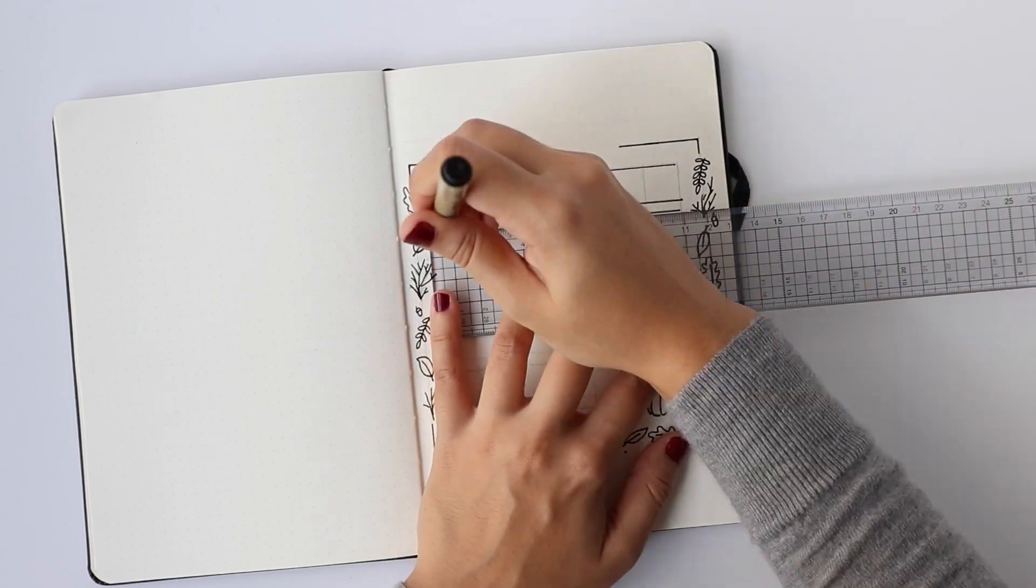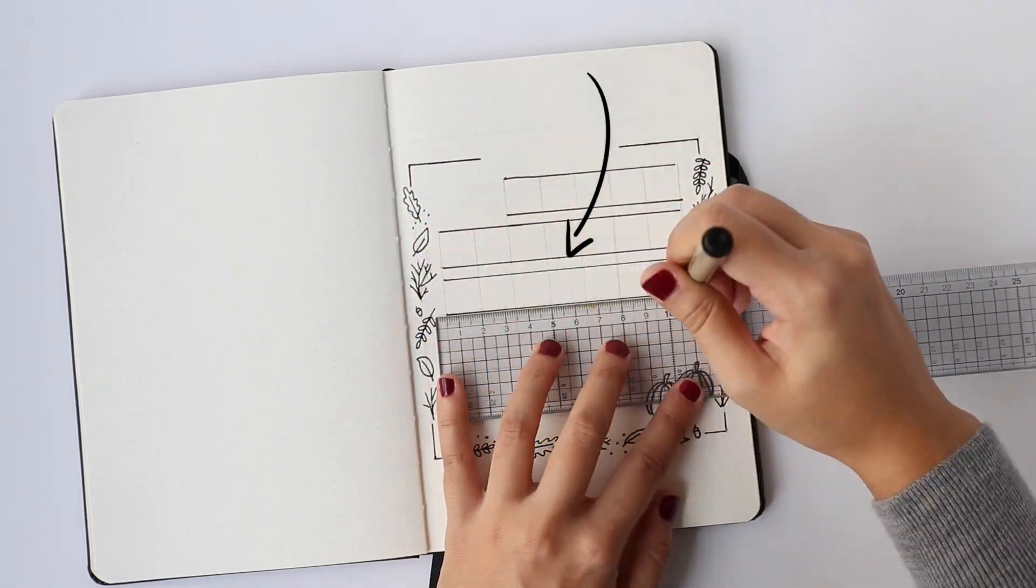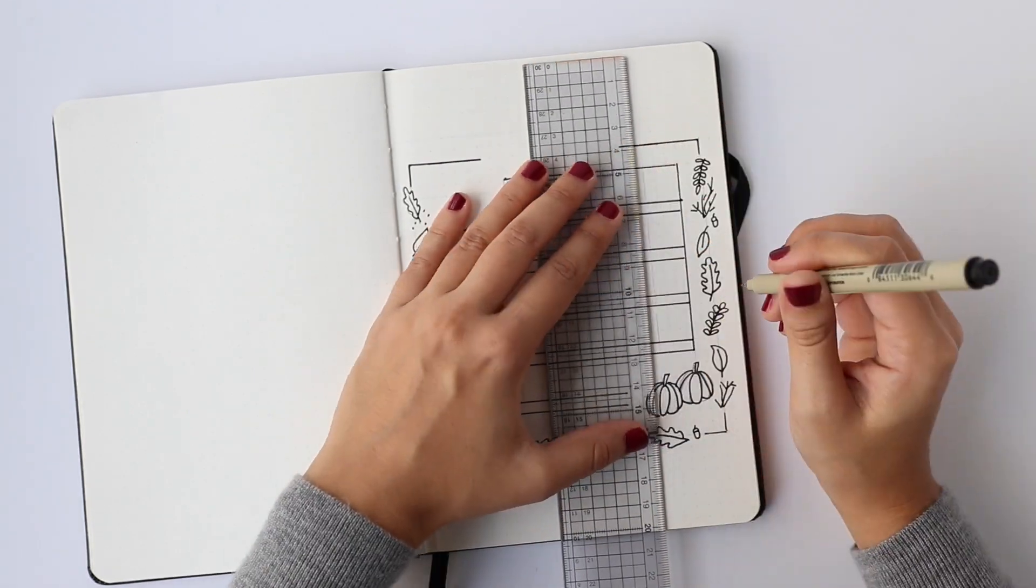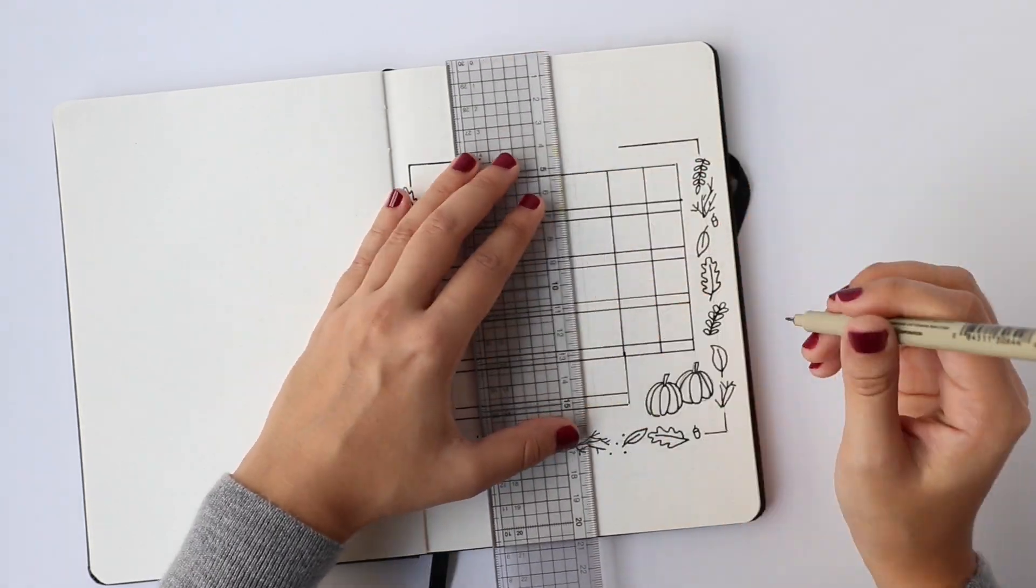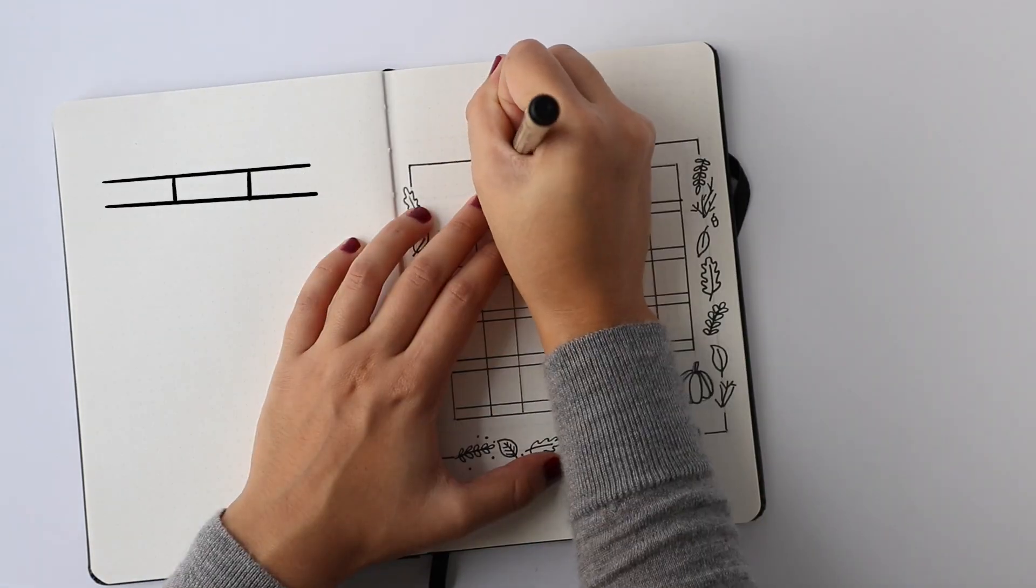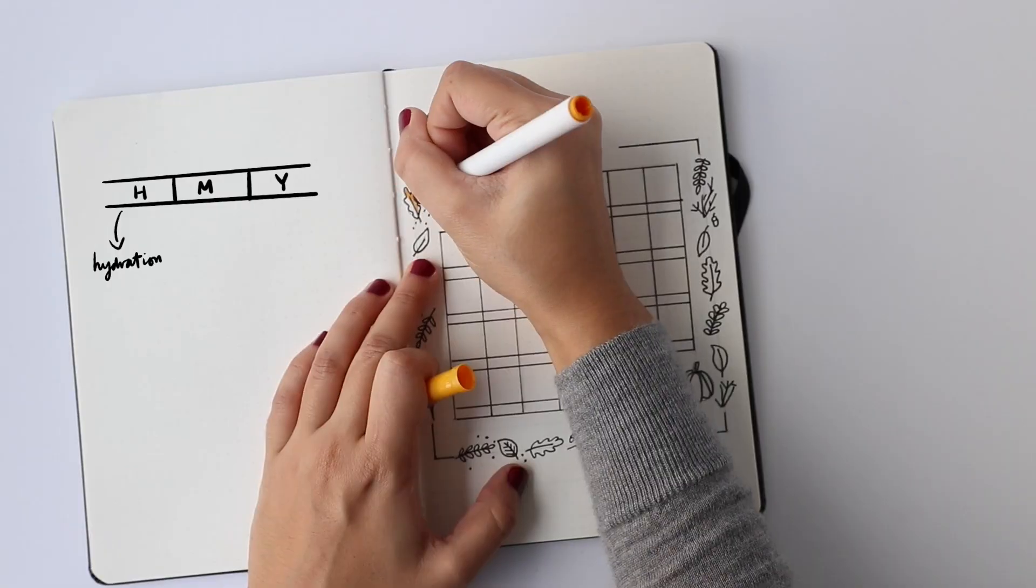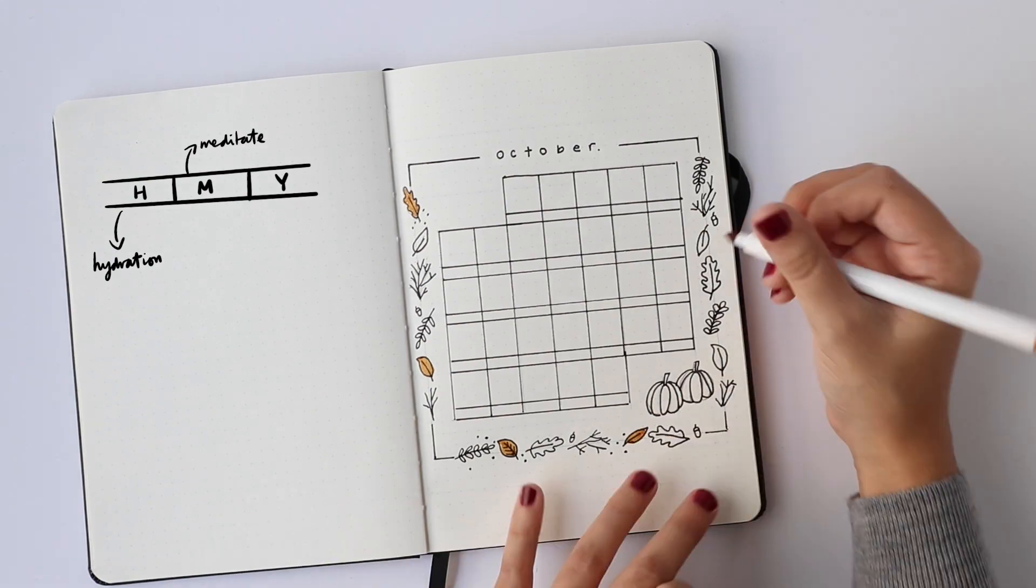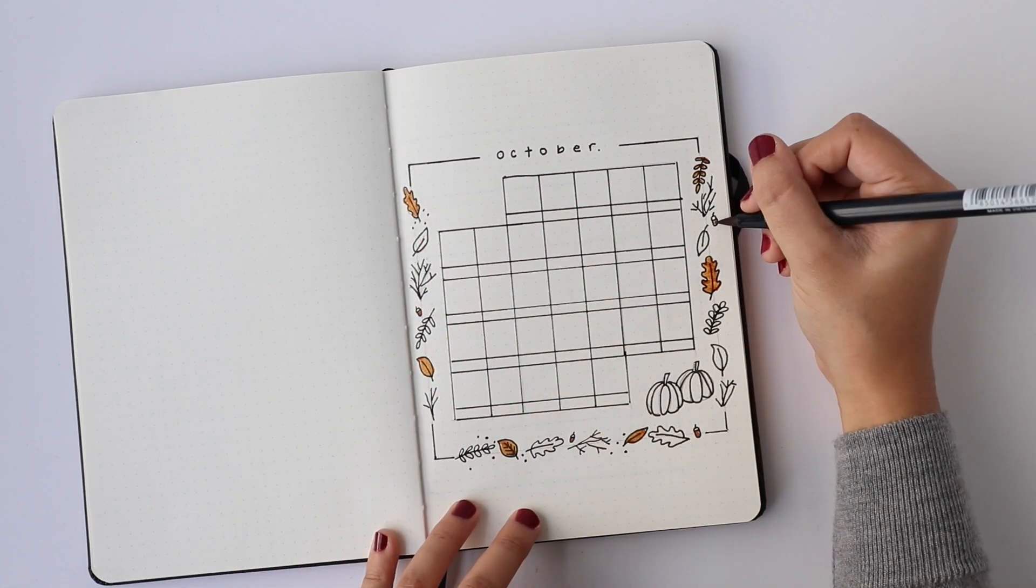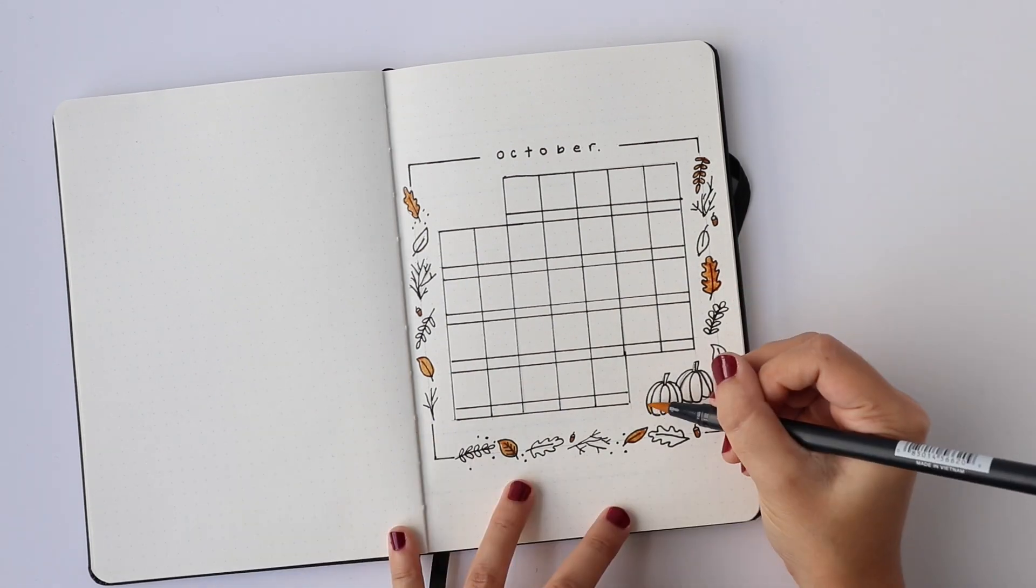So as you can see there's an extra line added at the bottom of each day of the month in this month at a glance spread, and that line is going to be divided into three mini little trackers that will track my hydration, my meditation, and my yoga. So that will be represented by H, M, and Y.